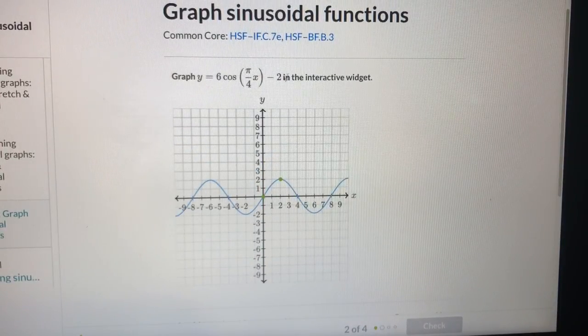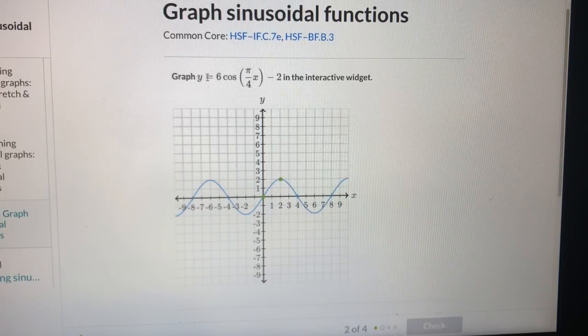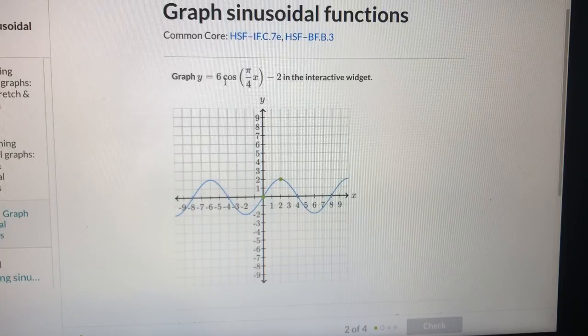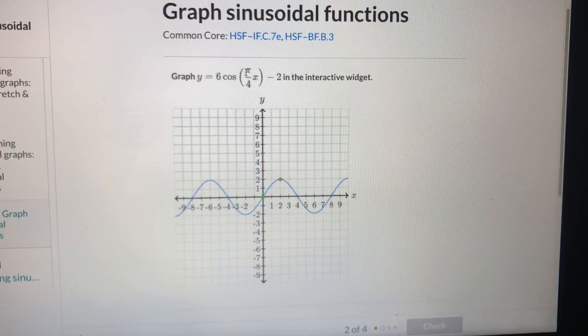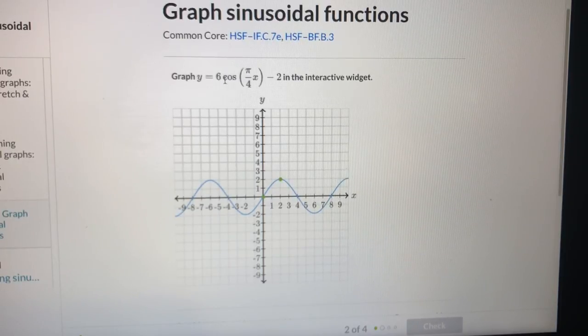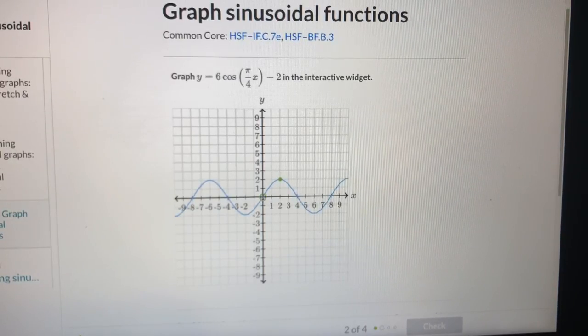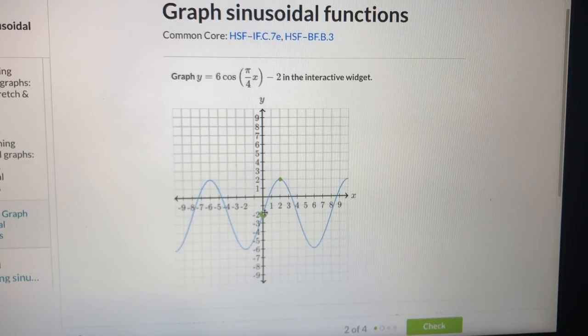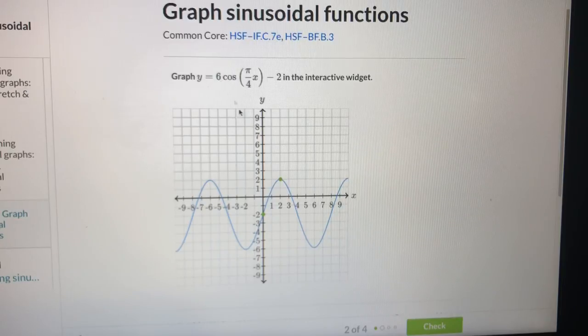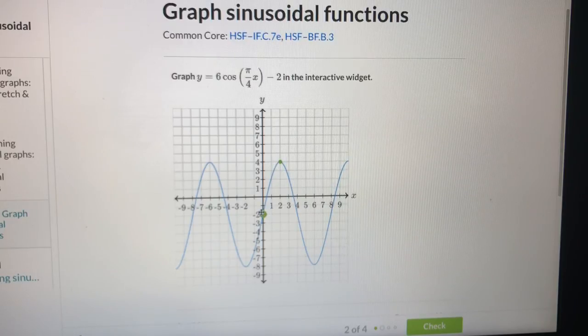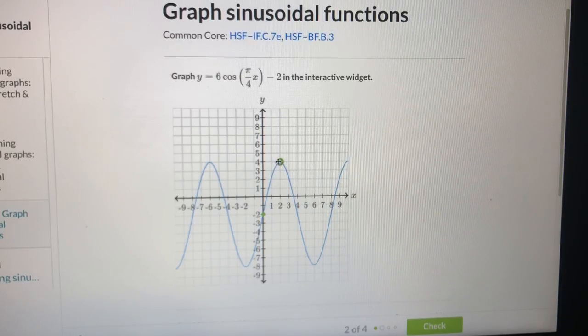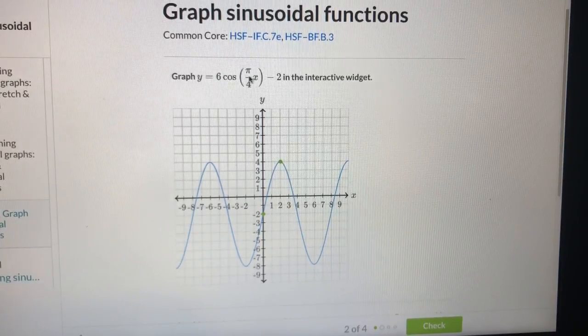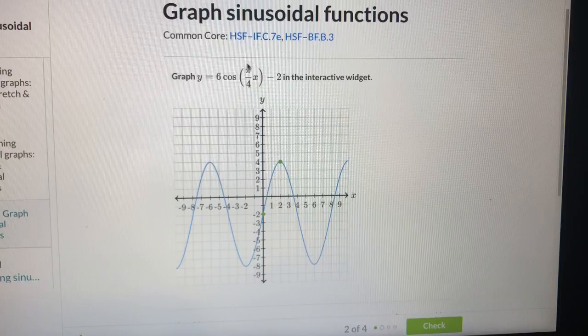So here we see this question immediately. Y equal to cosine, 6 cosine pi over 4, x minus 2. So the midline is negative 2. And the coefficient is 6, which means the amplitude is 6. Okay. Negative 2 to 4, positive 4 is 6.